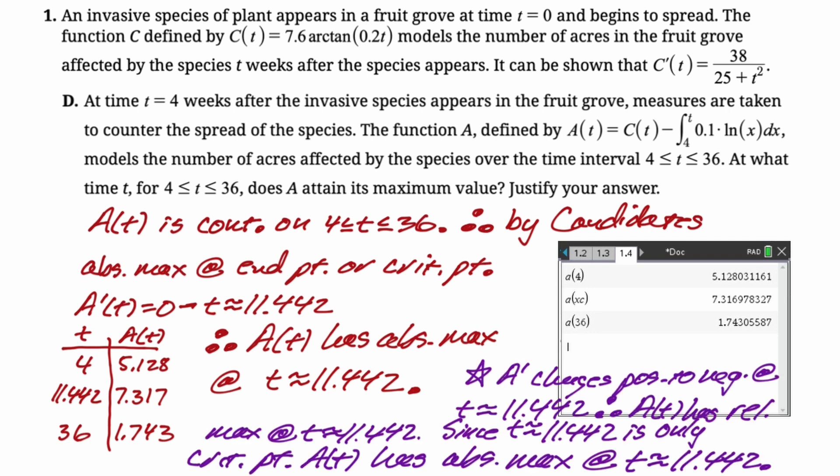would be to say A prime changes from positive to negative at T equals 11.442. Therefore, A of T has a relative maximum at T equals 11.442. Now, since 11.442 is the only critical point, and A of T has a relative maximum there, A of T also has its absolute maximum at 11.442.